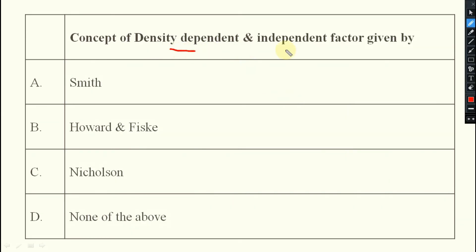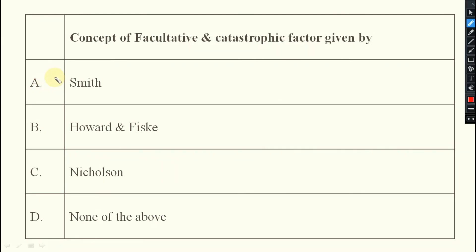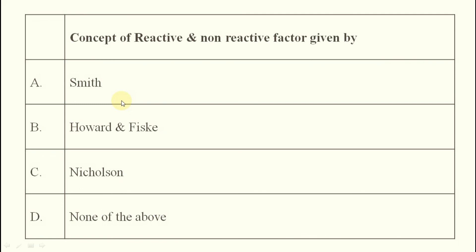The concept of density-dependent and independent factors was given by Smith. The concept of facultative and catastrophic factors was given by Howard and Fiske. The concept of reactive and non-reactive factors was given by Nicholson. Please go through the theoretical video if you want to watch these properly.